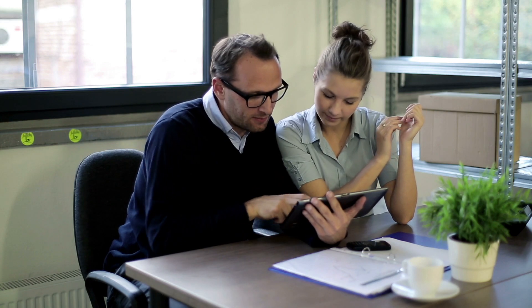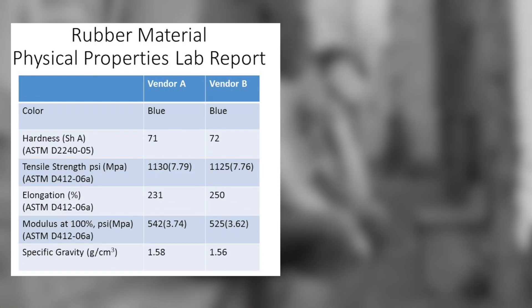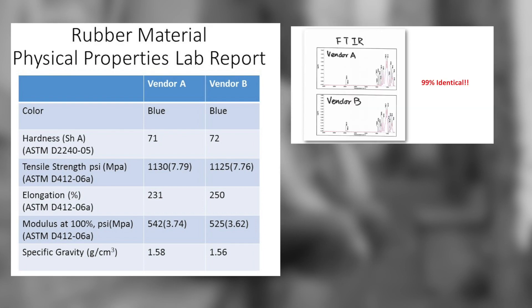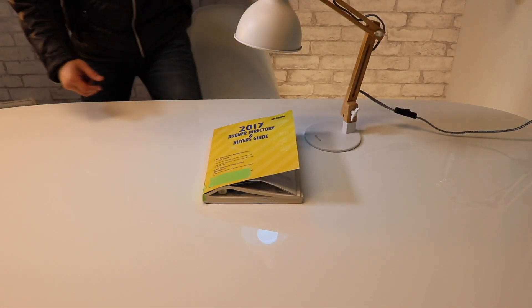As a quality manager, all the testing indicates both vendors have 99% identical material — so why is the o-ring performance totally different? Is it the same material with similar physical properties? If the test results show the same values, how come the vendor provides all the compliance information but the performance always fluctuates?